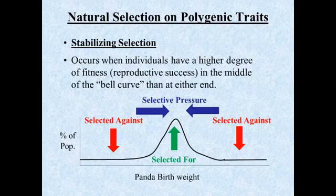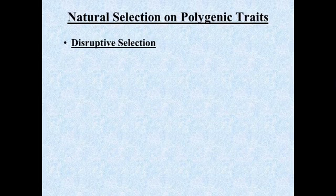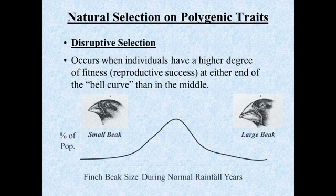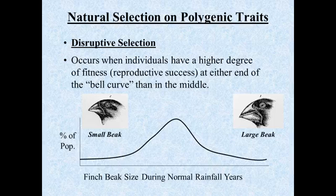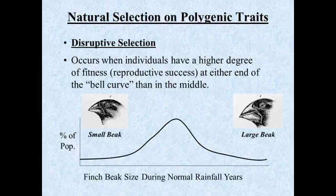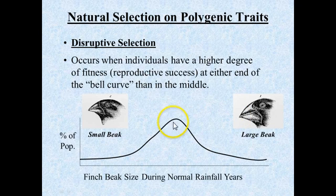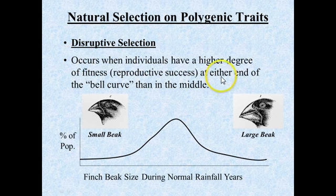We've now seen stabilizing selection and directional selection. The third example is something called disruptive selection. Disruptive selection occurs when individuals at opposite ends of the bell-shaped curve are favored. If there is a condition where individuals in the middle have a disadvantage but those at either end have an advantage, you have disruptive selection.